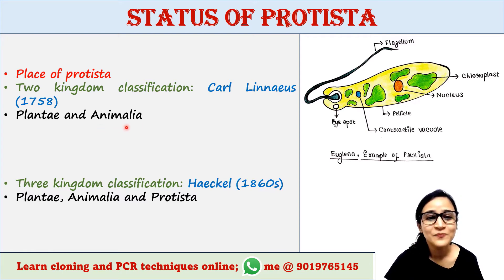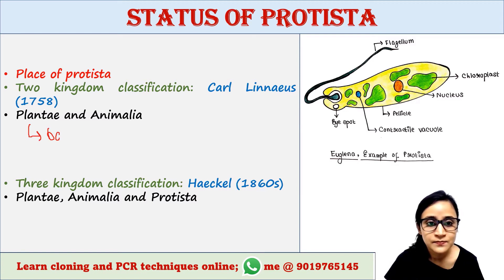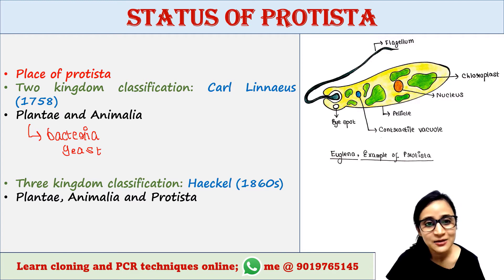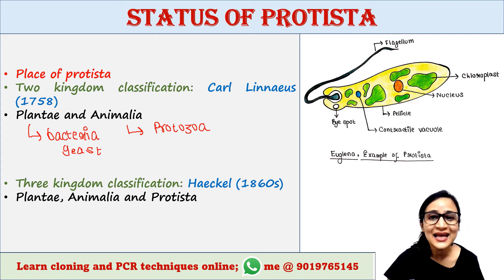Some microorganisms such as protozoa were classified as animals and placed in Animalia. So bacteria and yeast were placed in Plantae, and protozoa were placed in Animalia.